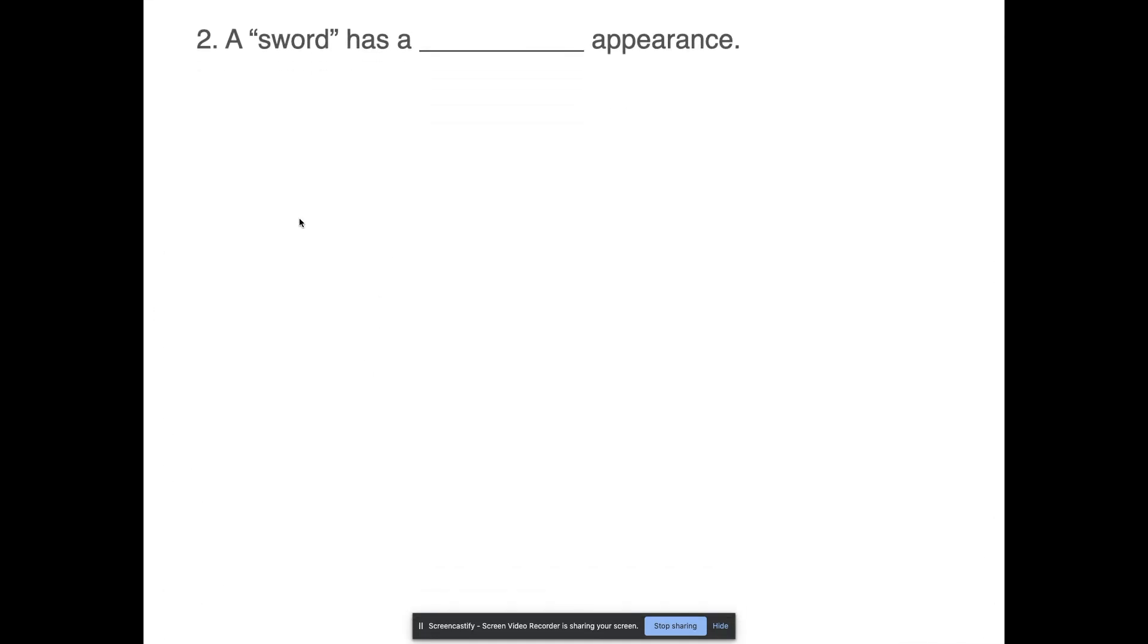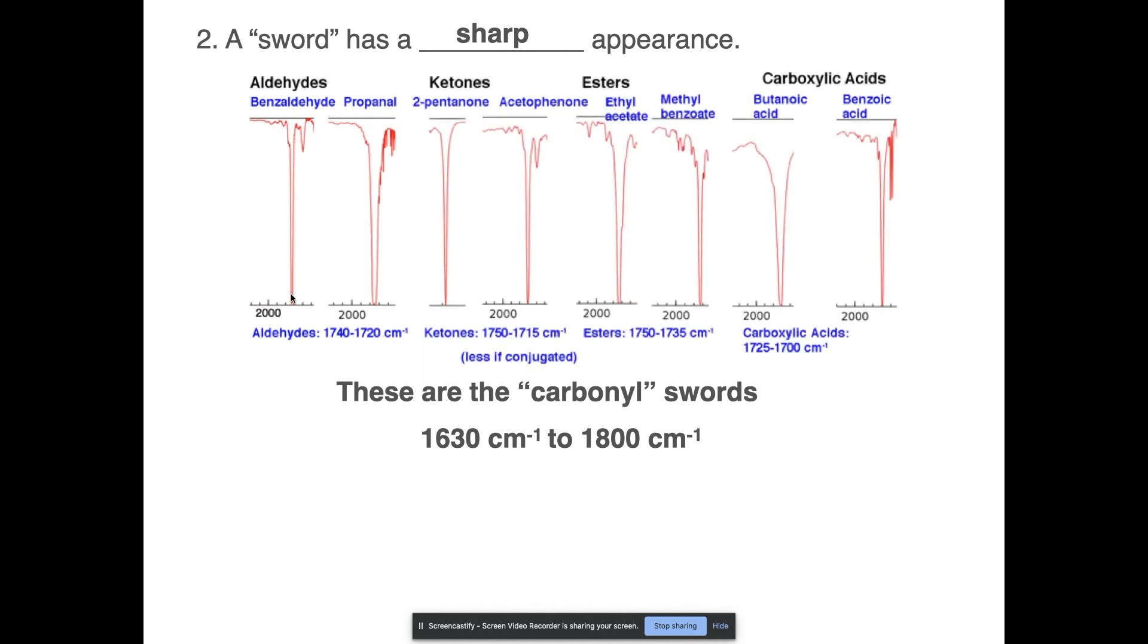Now that we know what a tongue is, what exactly is a sword? A sword is a very sharp appearance, and there are a couple of telltale ones for that. The one that I'm going to show you is called the carbonyl sword. When we're looking at a carbonyl group, that occurs between 1630 and 1800 inverse centimeters. You get this gigantic, very sharp movement in that region. Here are some aldehydes like benzaldehyde and propanal, you've got some ketones for examples, you've got esters and carboxylic acids. Notice that you get this really sharp pointed peak in those areas. That's the telltale sign that you have a carbonyl group.